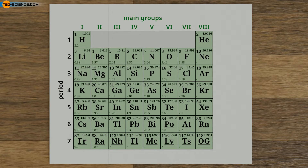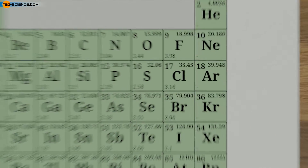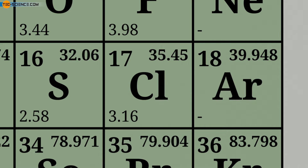In addition to the number of protons, the element box contains the average total number of nucleons in the atomic nucleus. This number can be found in the upper right corner of the element box and corresponds to the sum of the number of protons and the average number of neutrons — it is also called the nucleon number. For chlorine, the average number of nucleons is 35.45.